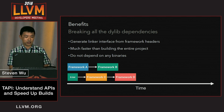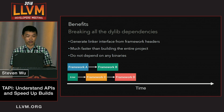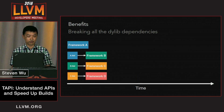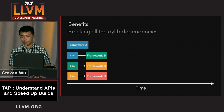The TBD generation from the headers is actually much faster than building the entire project, and it doesn't have any binary dependencies. With that in mind, you can actually do even better — you can generate every single TBD file for your OS in parallel. In this case, we break up all the dynamic dependencies, and everything can be built in parallel.